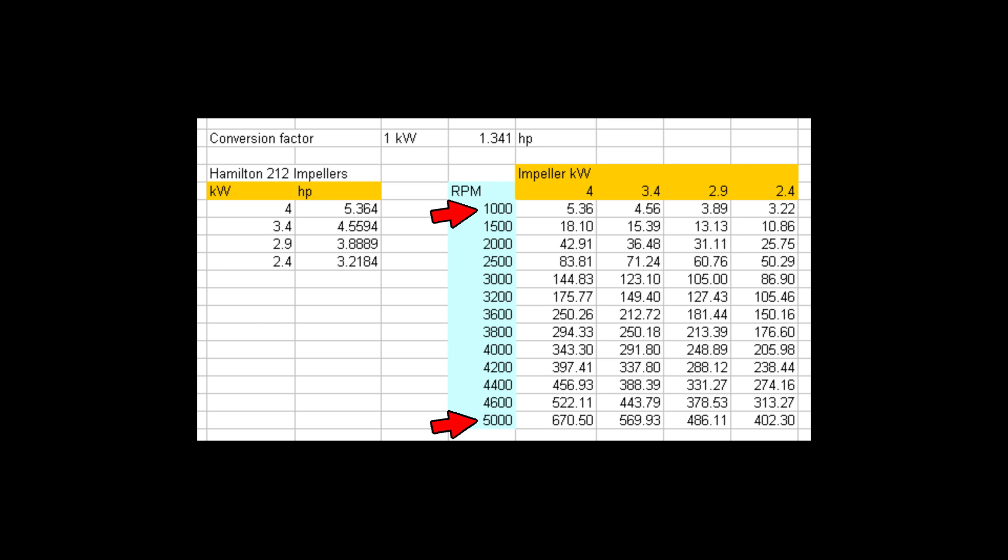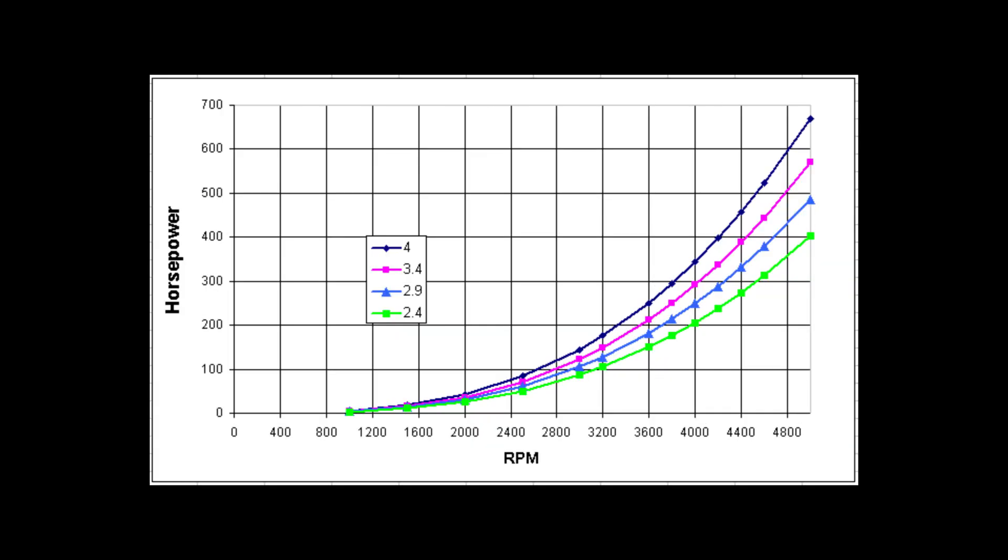And now if we plot those, they look like this. So you can see at idle, there's almost no horsepower input. And that's sort of evidenced by the fact that you can start your engine when it's effectively in gear, and there's no clutch to pop in a boat. You just turn the key, and the engine starts. So almost no power is required to hold it at an idle. And then by the time you get up to 4,000 RPM, there's a lot of power required and more for the 4.0 impeller, obviously.